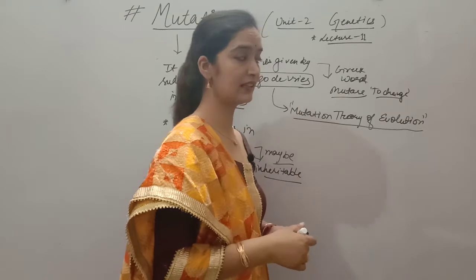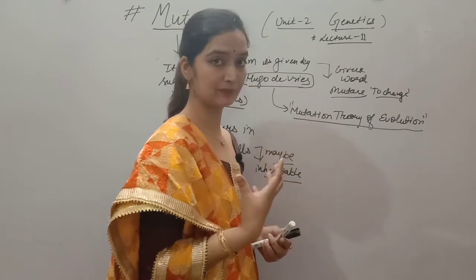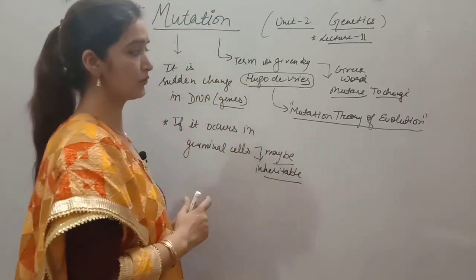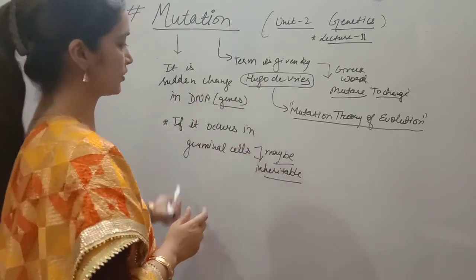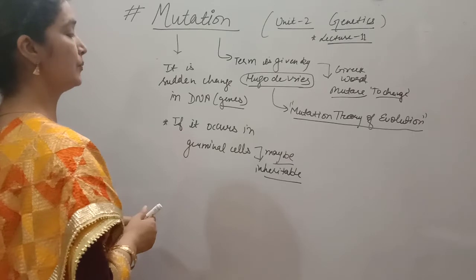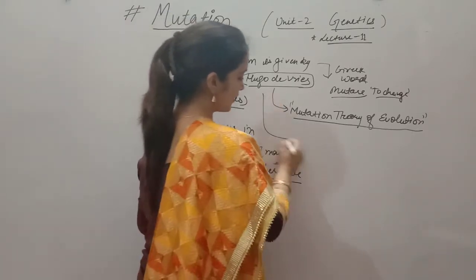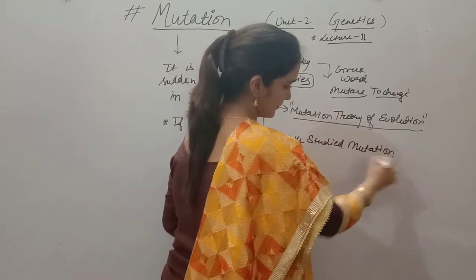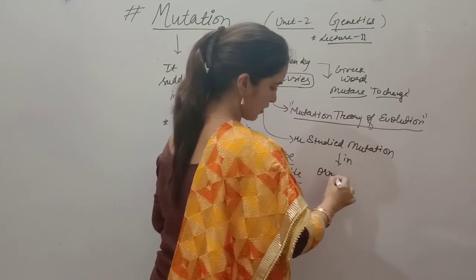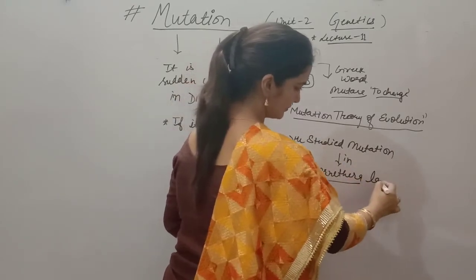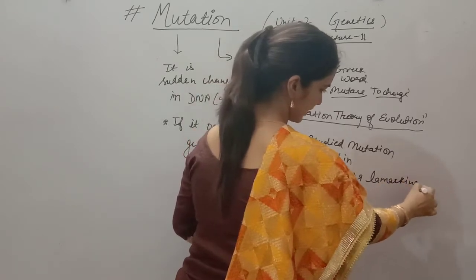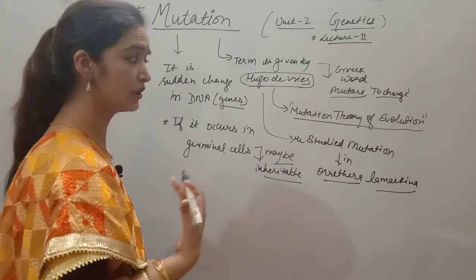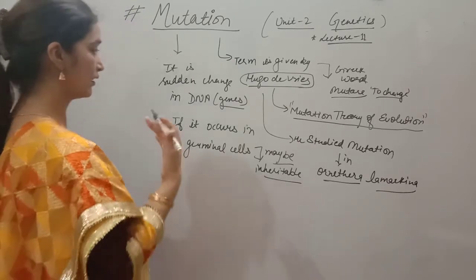According to Hugo de Vries, there is a single-step, large change — no gradual change in evolution. He gave the Mutation Theory of Evolution based on changes that occur in the genome. He studied mutation in a plant called Oenothera and gave certain reasons for how mutation occurs, noting many agents that cause mutation.